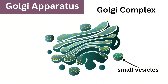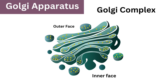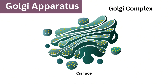The Golgi apparatus together with these vesicles is called the Golgi complex. The Golgi apparatus has an inner and an outer surface. The inner surface is called the forming phase or cis phase, and the outer is the maturing or trans phase.